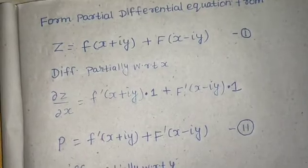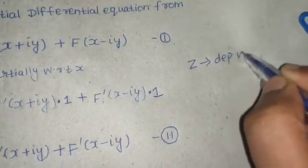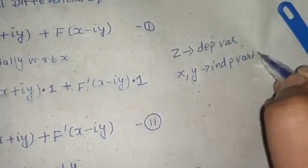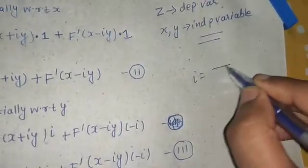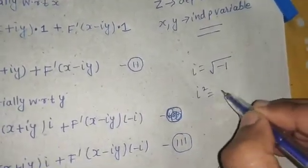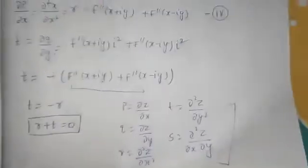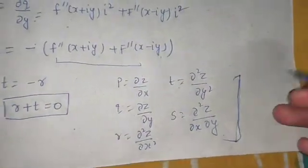To summarize: z is the dependent variable and x, y are independent variables. The standard notation is p = del z / del x, q = del z / del y, r = del²z / del x², t = del²z / del y², and s = del²z / del x del y. Remember that i is the square root of −1, so i² = −1. These notations are used throughout this chapter. Thanks and have a nice day.